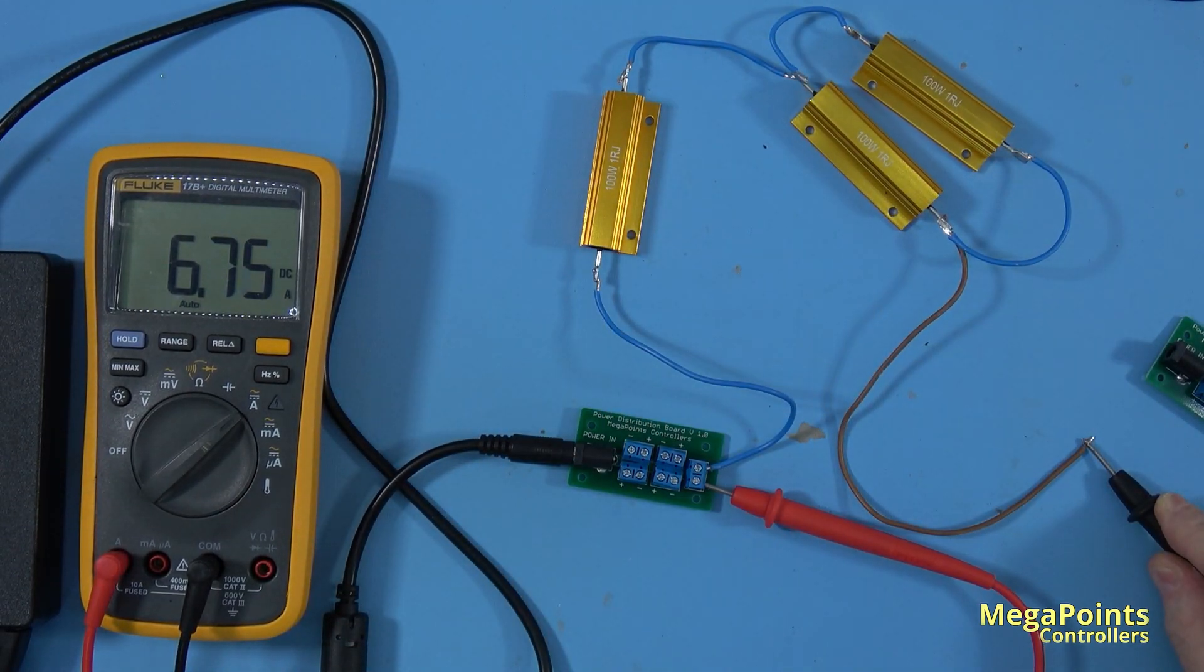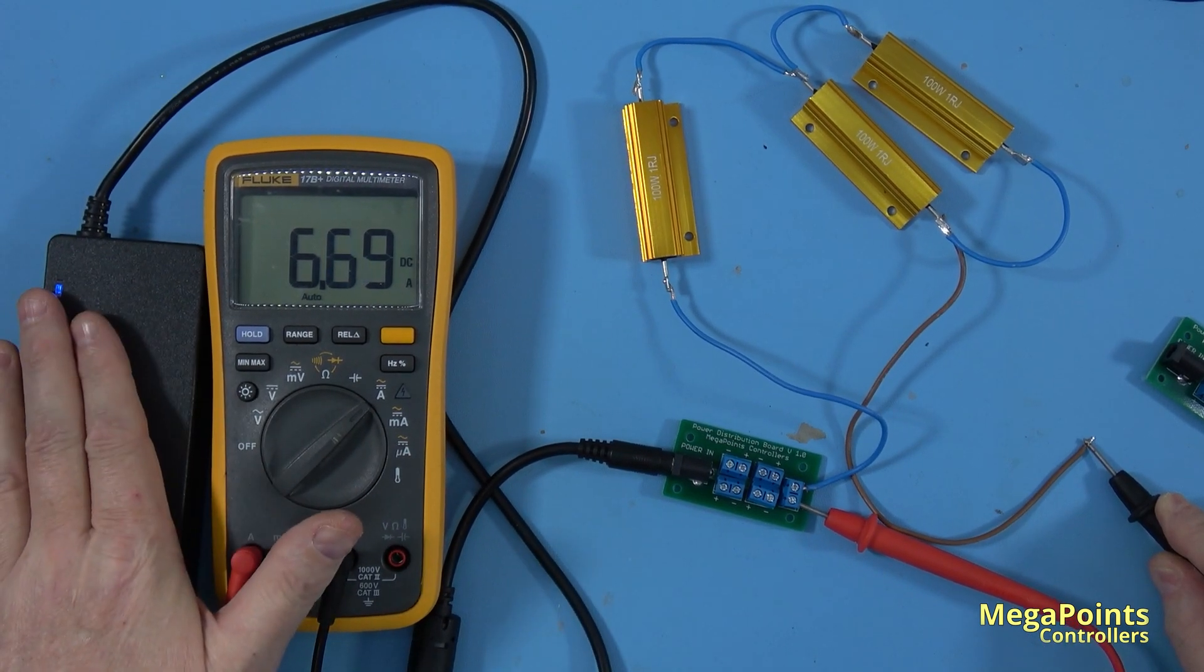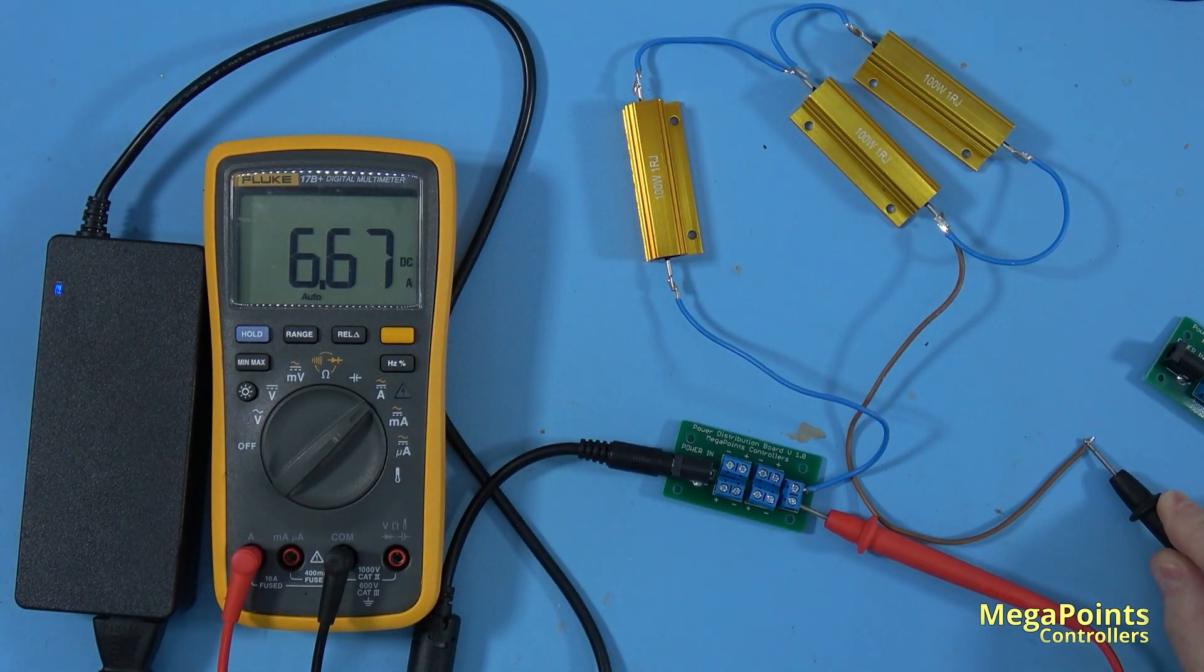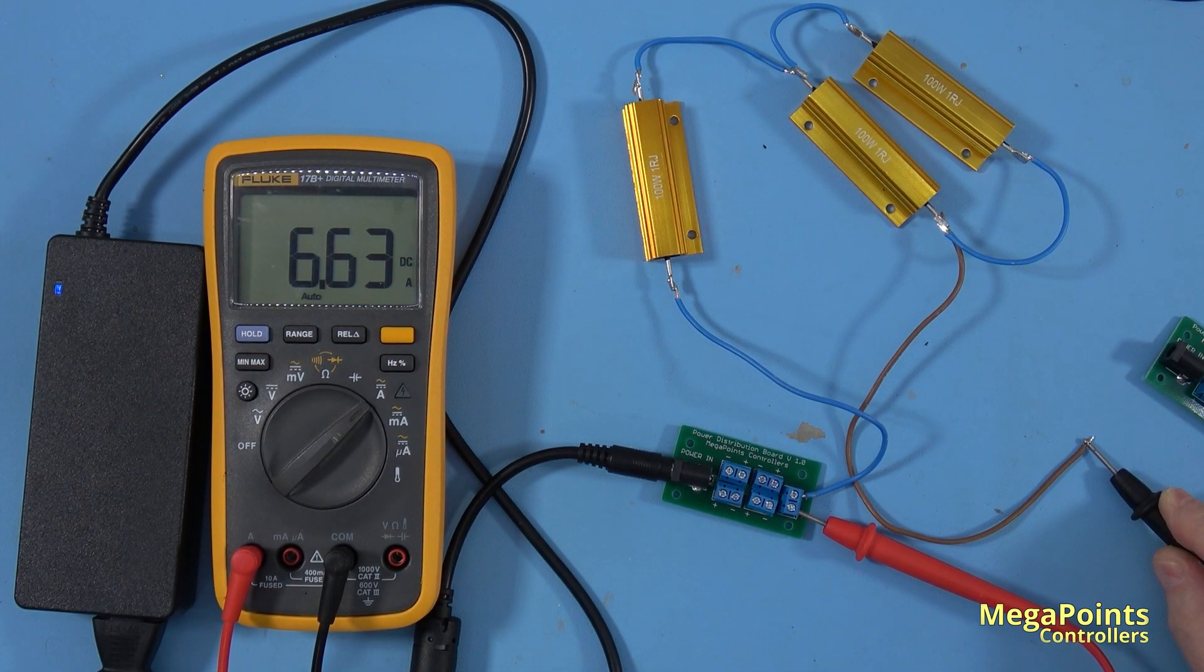There you have it—this power supply is working under a very high continuous load, far more than you would expect. It's delivering 6.5 amps at this load.